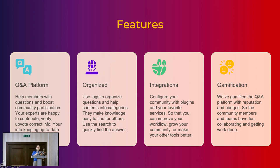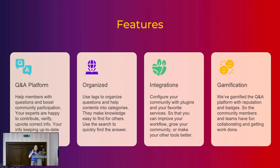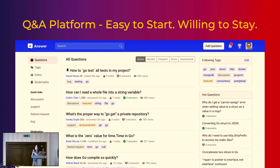In terms of product features, Apache Answer not only includes the basic functions of building a Q&A platform, but we also feature content management. We use tags to organize questions and categorize content, and to encourage active participation. To integrate Apache Answer with other tools you use, we designed a plugin system. You can configure your community with plugins and your favorite services. I will introduce these four major features one by one. First comes the fundamental feature to set up an online forum. The setup is very easy — even without any developers, your team can follow our documentation to deploy Answer easily.